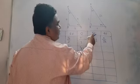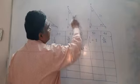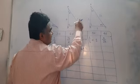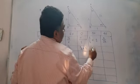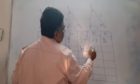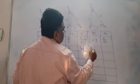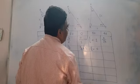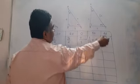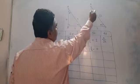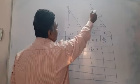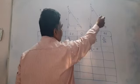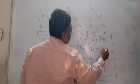Cos 90 is adjacent side upon hypotenuse, so 0 upon 1, which becomes 0. Now for cos 45, adjacent side upon hypotenuse gives 1 upon root 2.